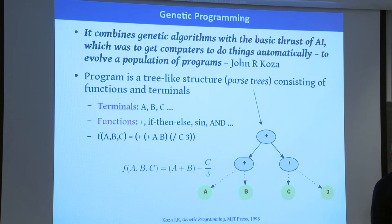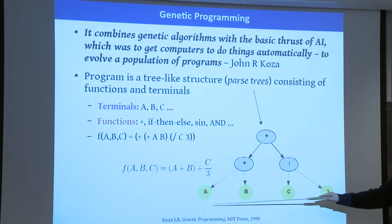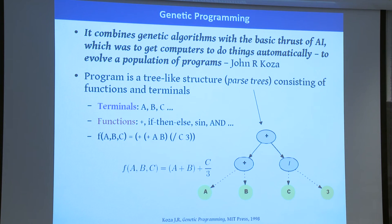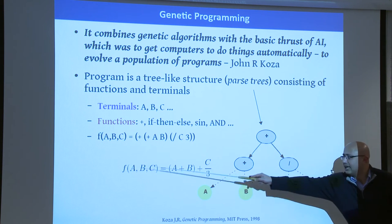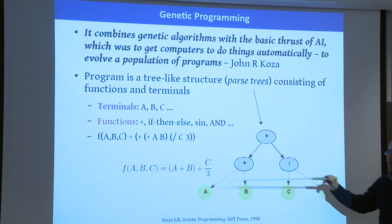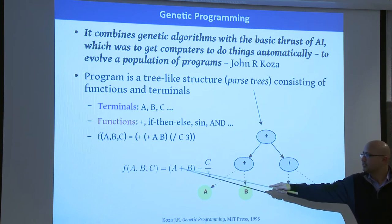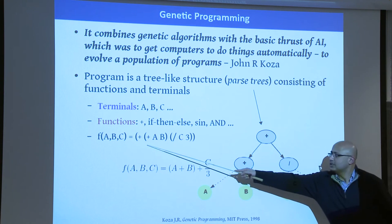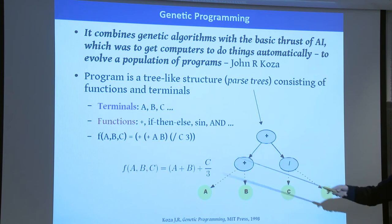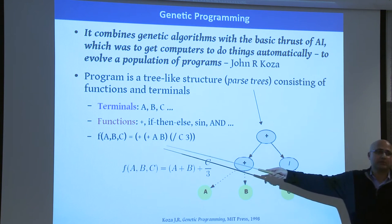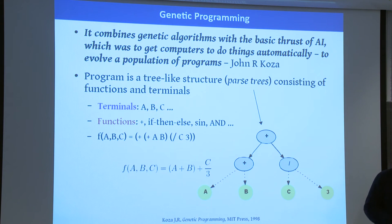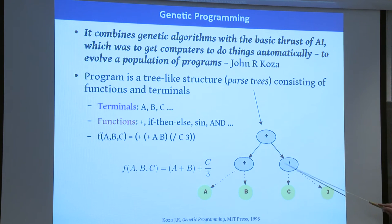You can also use if-then-else clauses. The ones in yellow — A, B, C, and the number 3 — are known as terminals; they are called terminals because you cannot extend the tree beyond that point. For example, we have a three-variable equation, A plus B plus C divided by 3. Looking at this tree, the plus operator is at the top, and this notation — called prefix notation — has all operands preceded by an operator sign.